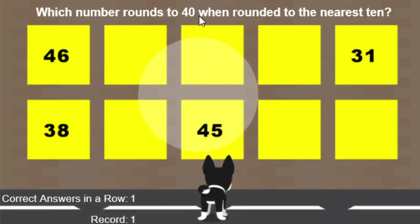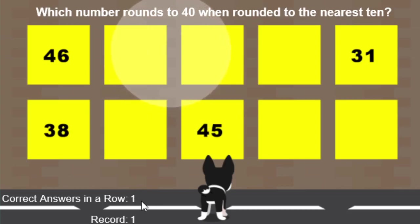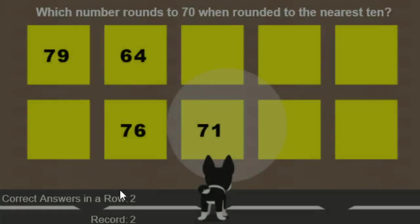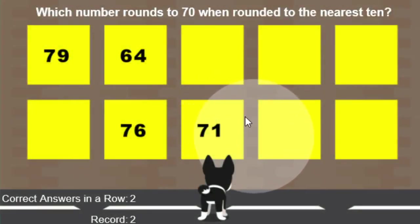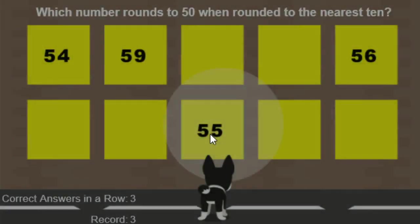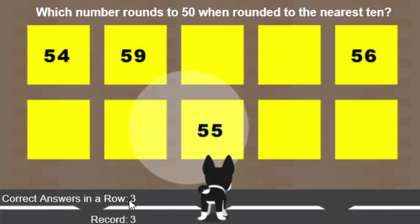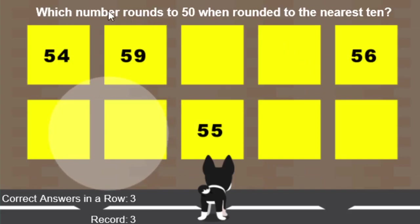Which number rounds to 40 when rounded to the nearest 10? That would be 38. You notice I've answered 1 in a row correctly and the record is 1. I'll click 38 — now it's 2 and 2. The correct answers in a row is now 3 and the record is 3. Now it says which number rounds to 50, and the actual answer is 54.